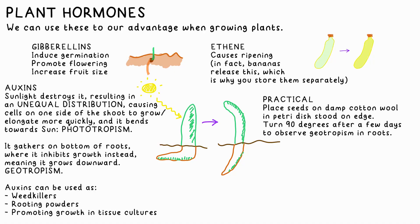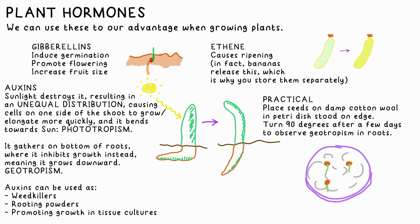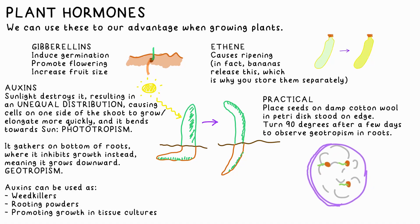We can do a mini investigation: put some seeds on damp cotton wool in a petri dish, stand the petri dish on its side, leave it for a few days, then turn it 90 degrees, and you should see that the roots have bent in that time, demonstrating geotropism in roots.